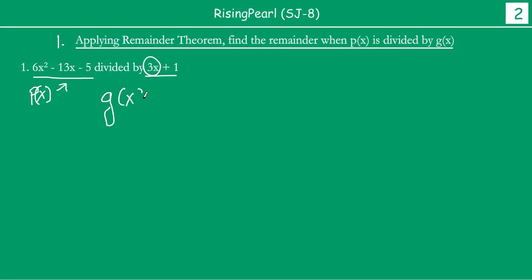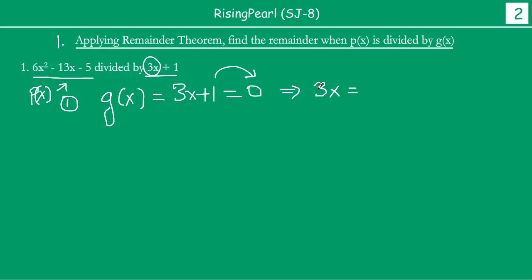So hamaare yaha pe we have g(x) equal to 3x plus 1. The first thing we have to do is find out the zero of this polynomial. We equate the polynomial to 0: 3x plus 1 equals 0. Taking 1 to the other side, we get 3x equal to minus 1. Then dividing both sides by 3, we get x equal to minus 1 by 3.